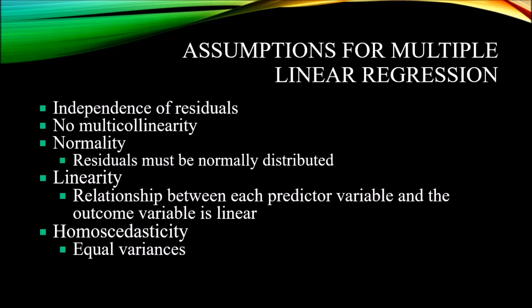Next is the assumption of linearity — the relationship between each predictor variable and the outcome variable needs to be linear. We would examine these one at a time: load age and look at adaptability, then IQ score and the outcome variable, then hours of study and the outcome variable. Linearity is tested using a scatter plot. The last assumption is homoscedasticity — equal variances of the residuals for all levels of the predictor variables — also tested with a scatter plot. We plot the values predicted by the regression model against the residuals and ensure the residuals do not vary systematically with the predicted values.